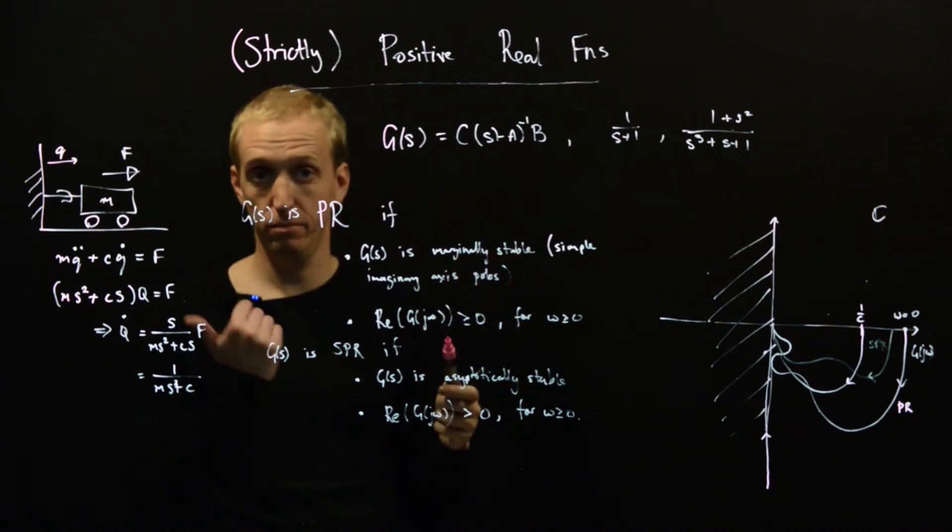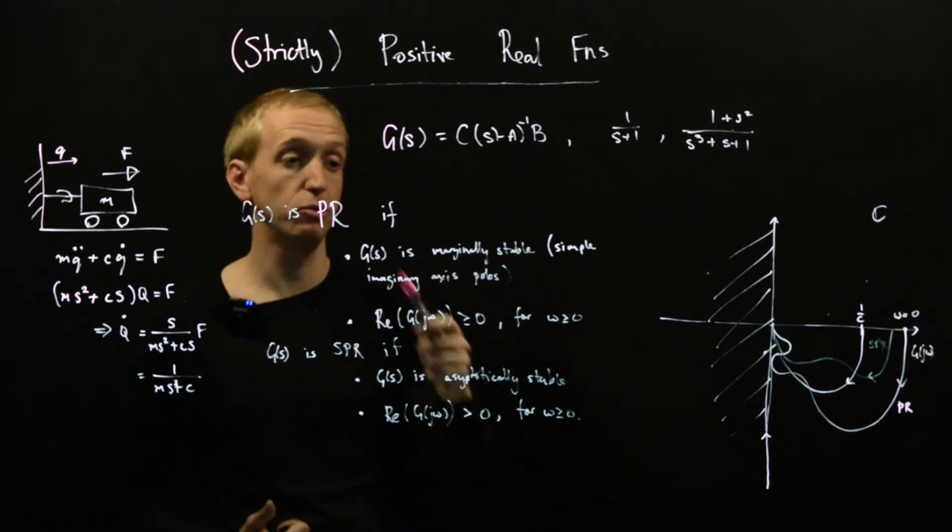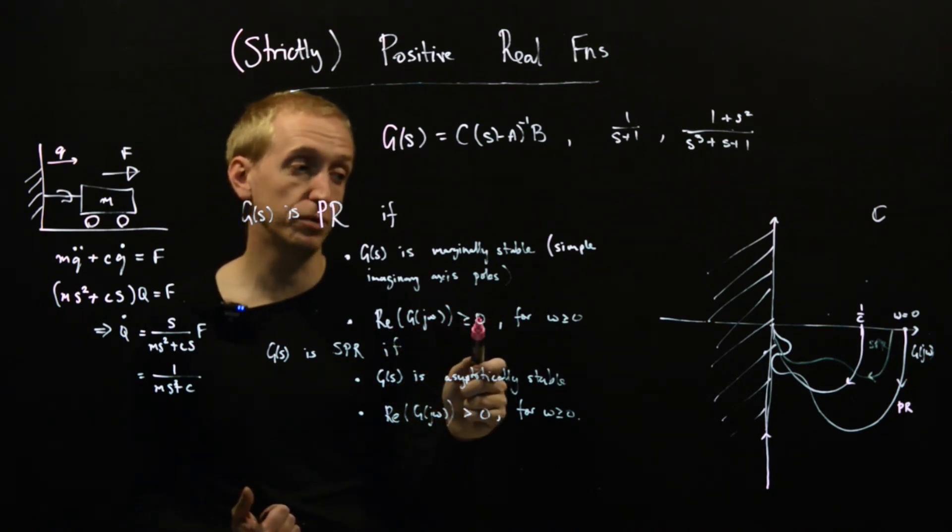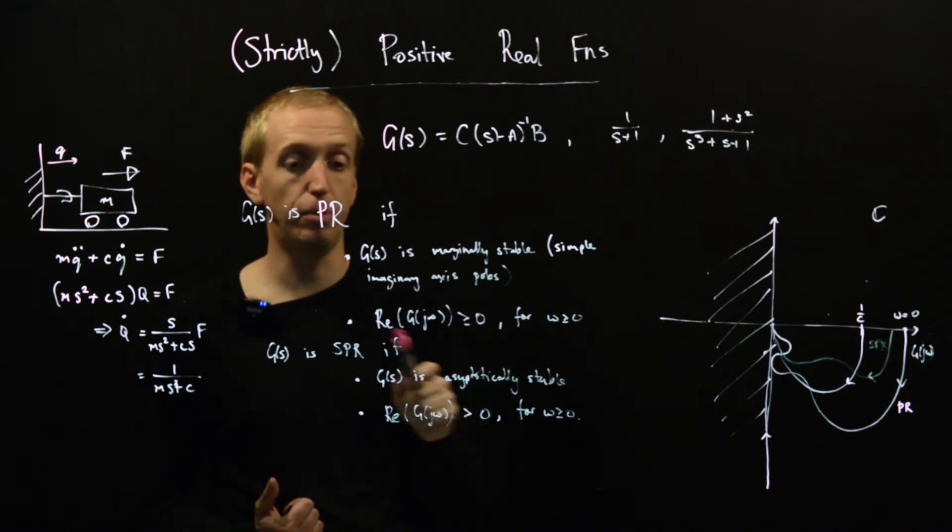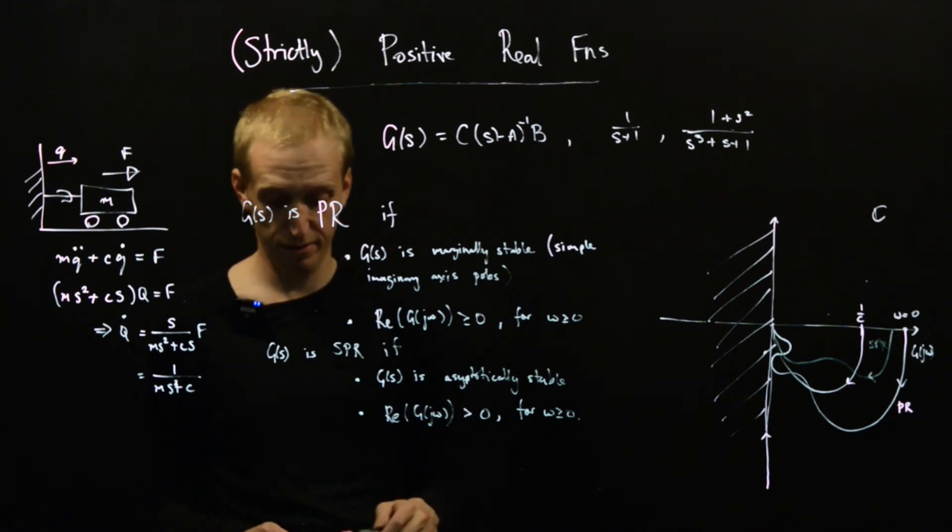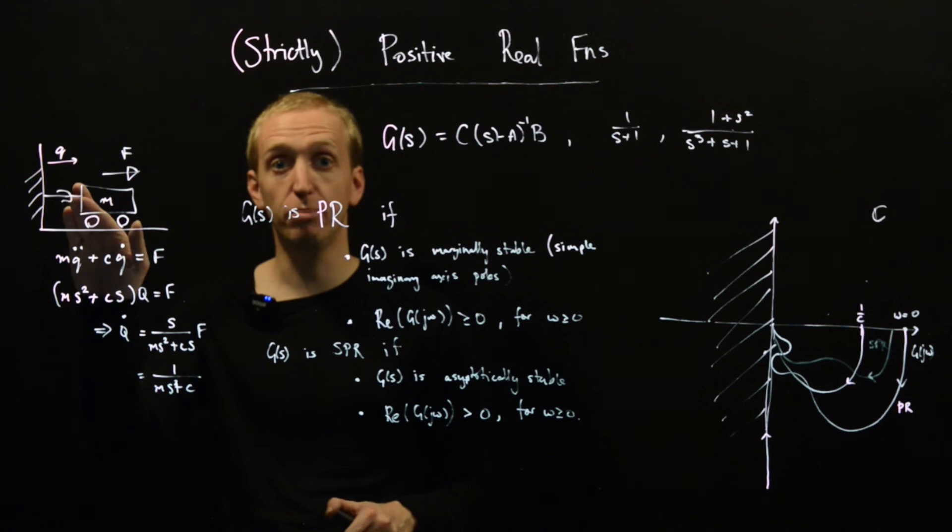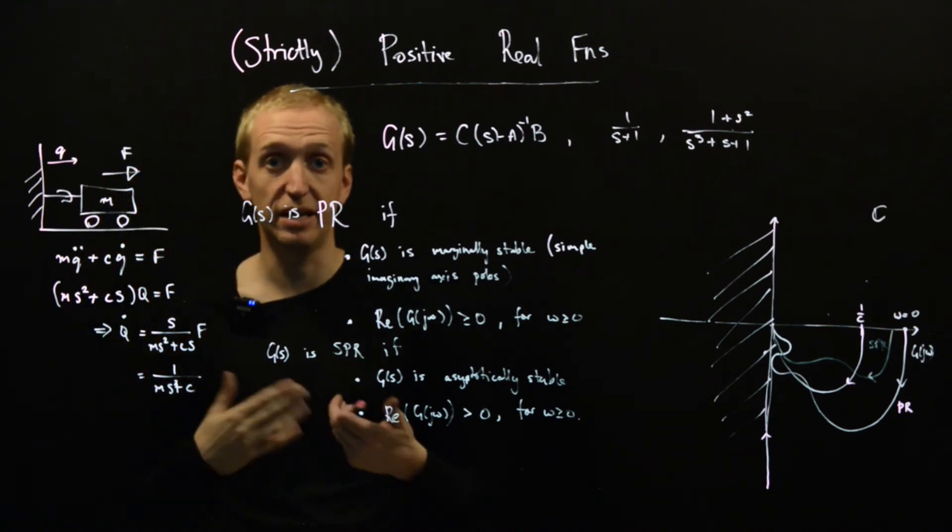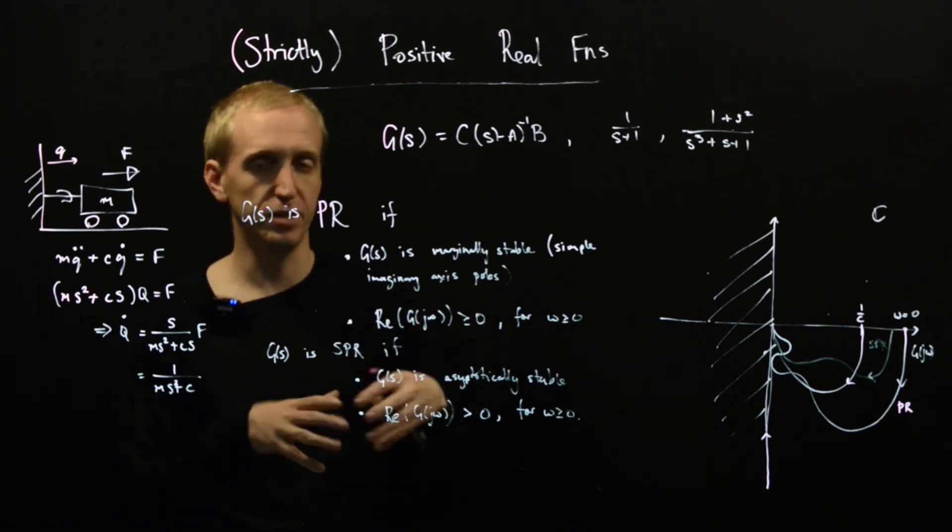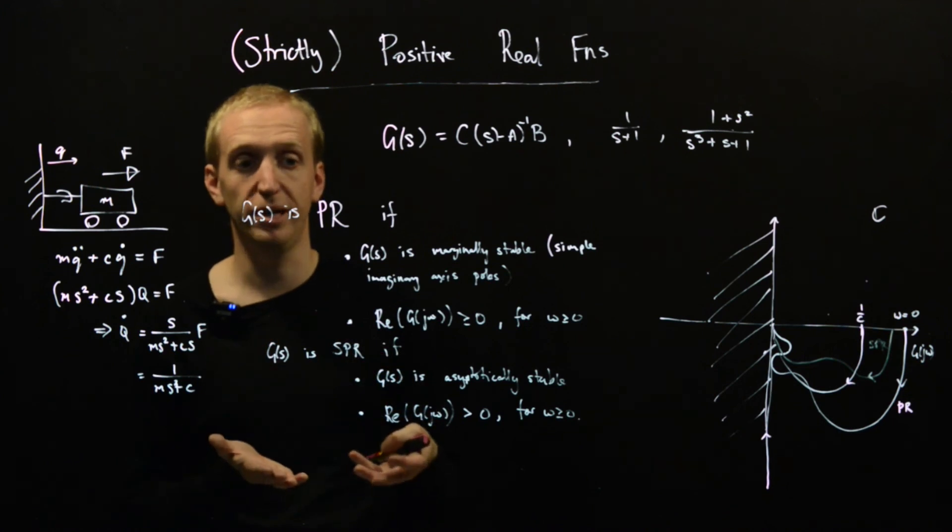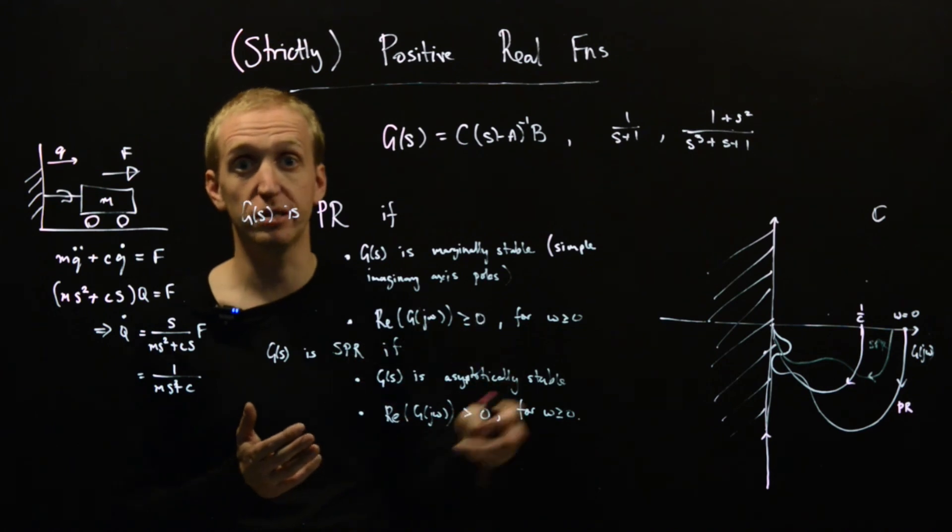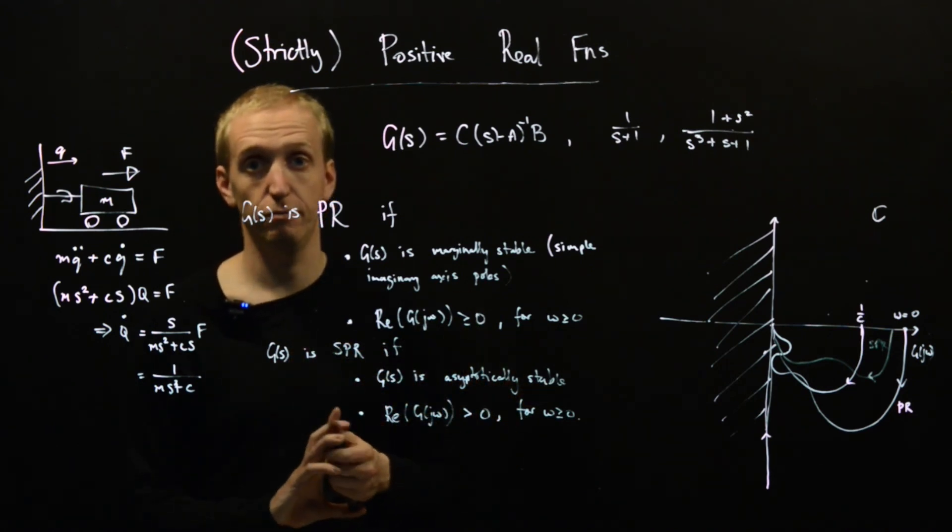When c is equal to zero, this is equal to one over m s. And then the Nyquist diagram just looks like this here. So it's just an integrator. And that meets the condition here. It's marginally stable. We've got one pole at the origin, but it's simple. So marginally stable. And the real part of the Nyquist diagram is greater than or equal to zero. So it satisfies the positive real condition, but it fails both of the strictly positive real conditions. And if c is equal to zero, we have no damper. And so our system still doesn't have any internal energy source, but it's what's called lossless. And so passive systems that do not dissipate energy correspond to positive real transfer functions. And if they have some energy dissipation in them, they'll become strictly positive real.